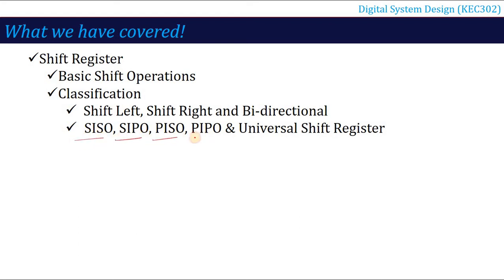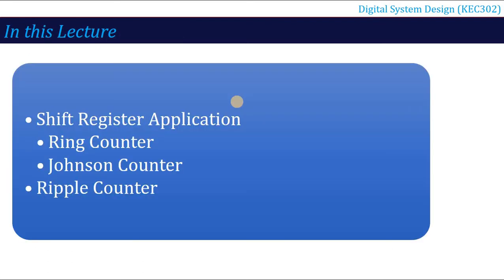The types covered were SISO, SIPO, PISO, and PIPO — and all these functions combined into a single unit called the universal shift register. Universal shift register and bidirectional shift register are the most important ones for exam questions. In this lecture, continuing with shift registers, we will talk about shift register applications.